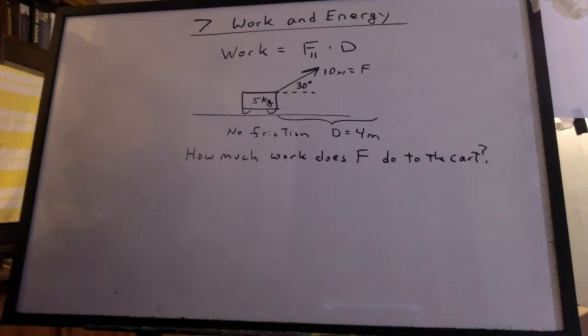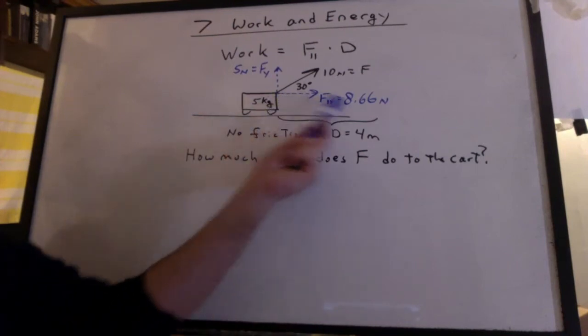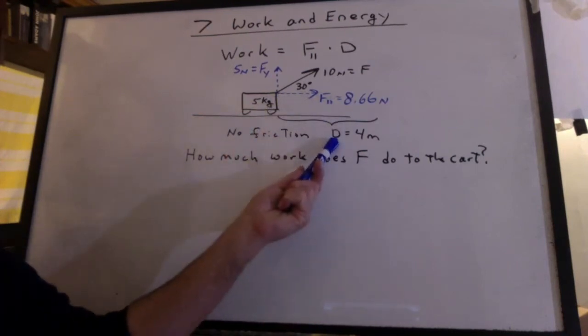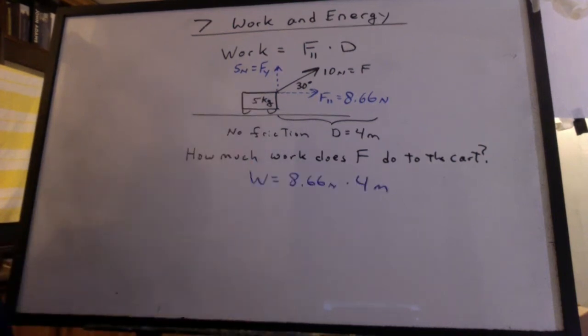Now in this situation, we're going to ask how much work does the force F do to the cart? You can see that the X component is parallel to the 4 meters, not the Y component. So we're going to calculate 8.66 newtons times 4 meters, and we get 34.6 joules.